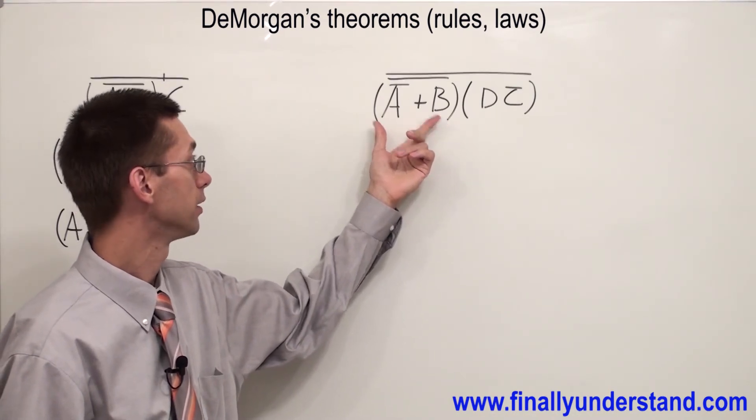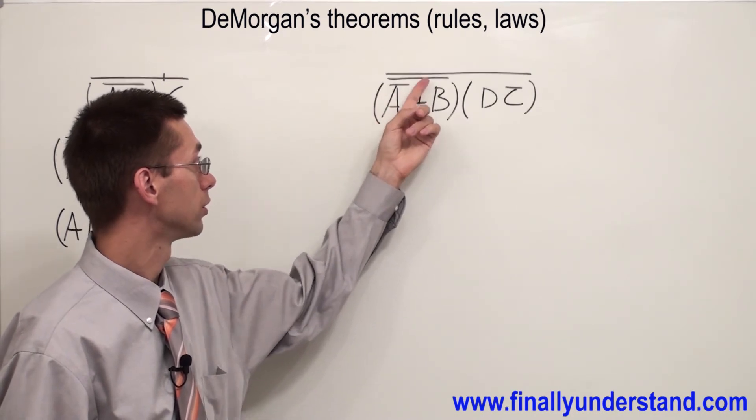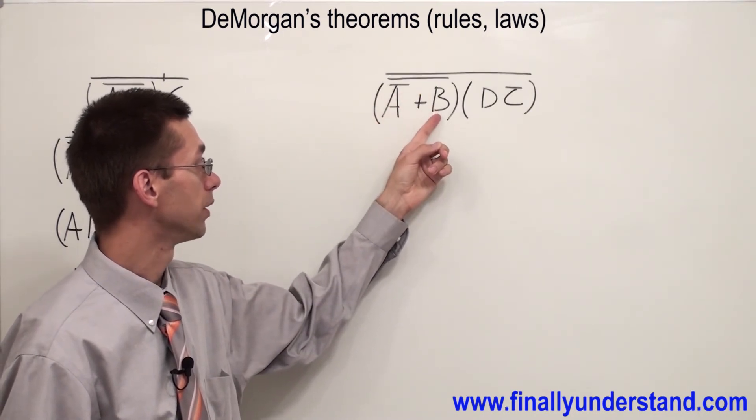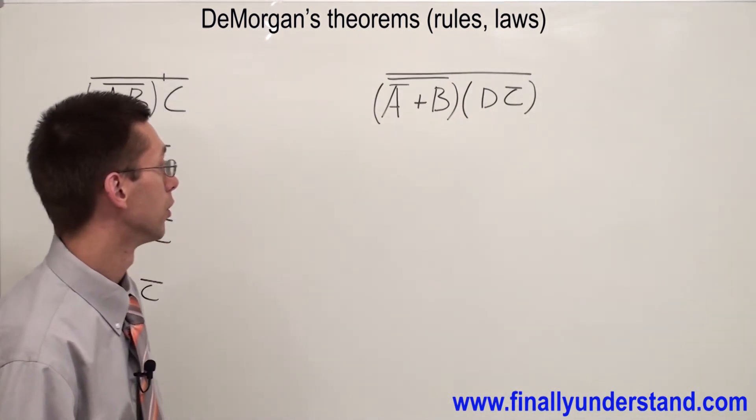I have A̅ OR B and I have D AND C̅. Where am I supposed to cut my bar? Exactly above the junction which joins these two terms.